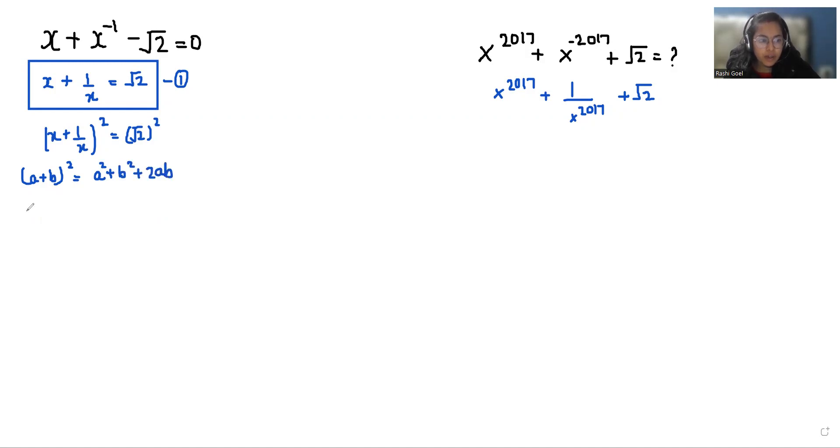So we can write this as x square plus 1 by x square plus 2 times x times 1 by x equals root 2 square. Here we can eliminate x with x, so what is left: x square plus 1 by x square plus 2 equals 2. If I subtract 2 from both sides, it becomes x square plus 1 by x square equals 0.